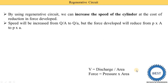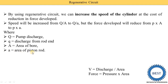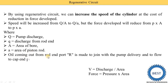Capital Q equals pump discharge — the oil coming out from the pump. Small q equals the discharge from the rod end. Capital A equals the area of the bore, meaning the inside diameter of the cylinder. Small a equals the area of the piston rod. In a cylinder the piston is connected with the piston rod, so small a is the area of the piston rod.